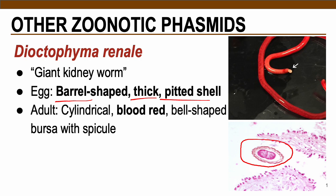For the adults, these are cylindrical and usually colored red or blood red. Sometimes they are bell-shaped with a bursa that has a spicule — just like here on this picture. A spicule is a pointy structure found under the bursa of the worm, used for copulation or reproduction.